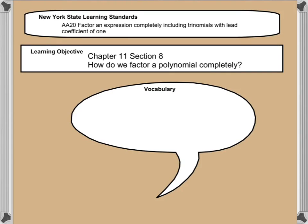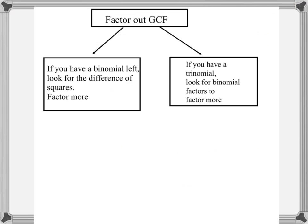Today we're going to talk about how we factor an expression completely. The use of the word 'completely' here is going to turn out to be very critical. We've been working on factoring expressions for a while, and now the idea of factoring completely is going to come into play. This follows chapter 11, section 8 of the AMSCO textbook, and there's no new vocabulary today.